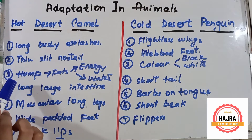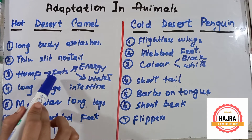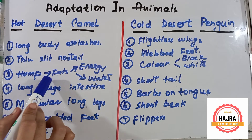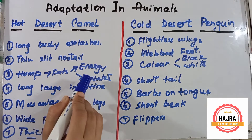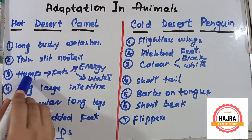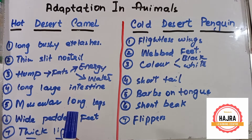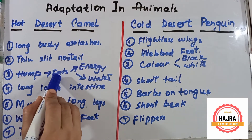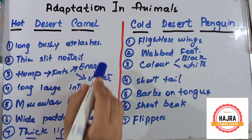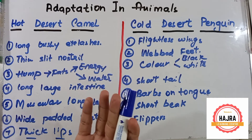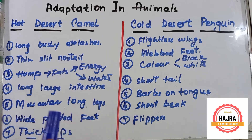Now let's talk about the hump. Inside the hump there is fat — fat is stored inside the hump, and later on this fat converts into energy and water. Just because of the hump, camels can live in the hot desert for up to 15 days. Because this fat converts into energy and water, the camel can go 15 days without water. This is the function of the hump: to store fat, which provides energy and water.